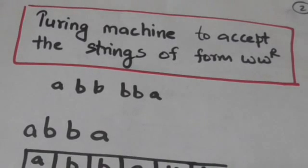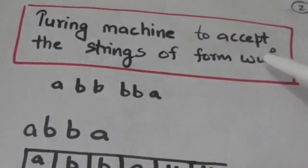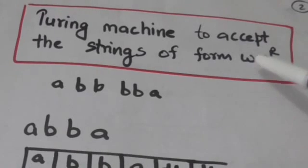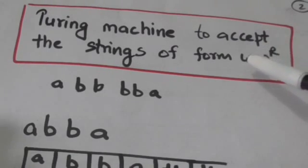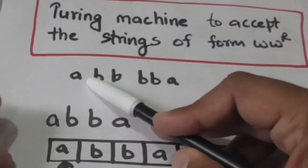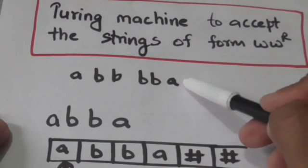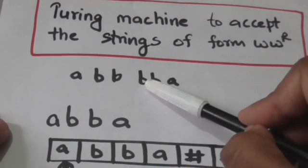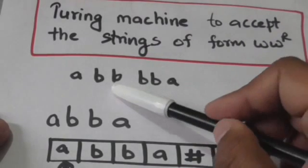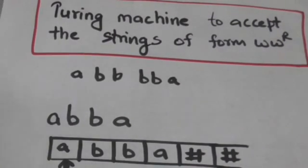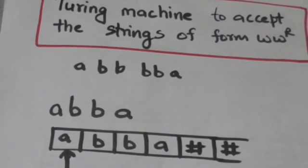Now let us see the working of a Turing machine which accepts strings of the form WW^R, where W^R is the reverse of string W. In strings of this form, the first symbol of the string is the same as the last symbol, the second symbol is the same as the second from last, the third symbol is the same as the third from last, and so on.